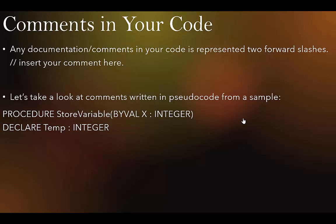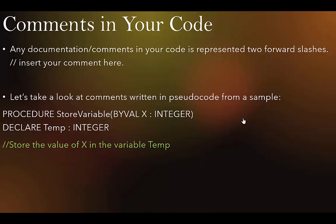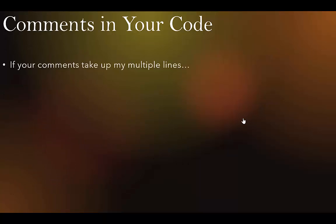You put two forward slashes and you can insert your comment. Here's a sample: we have a procedure storing a variable by value x as integer, declaring temp as an integer data type. Store the value of x in the variable temp — usually your comments come before the line of code you're commenting on. So here we are storing x into the variable temp, then we end the procedure.